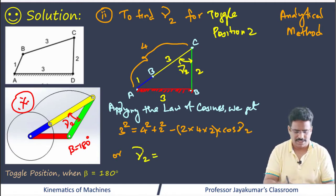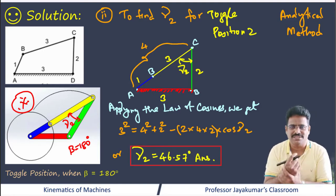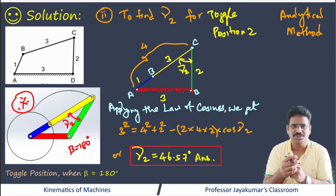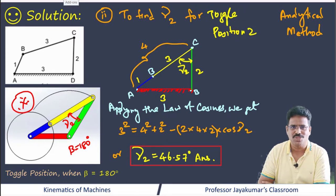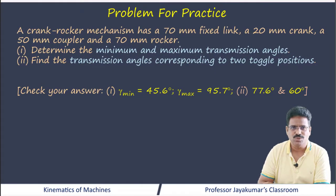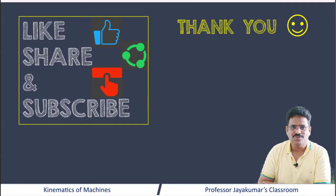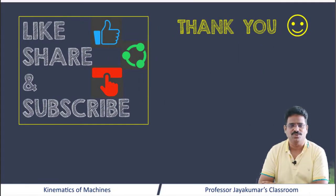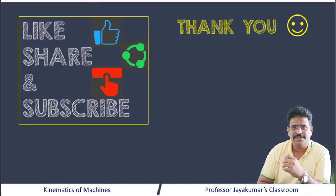That's it — we have learned how to determine transmission angles for the two toggle positions. The same problem can also be solved by the graphical method, and you should get the same answer. I have given you a practice problem to try at home and check your answer. Hope you found this lecture video useful. If so, like this video, share it with your friends, subscribe to the channel. Thanks for watching, take care, bye.